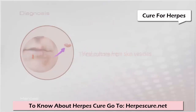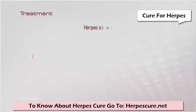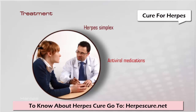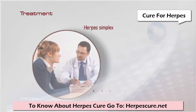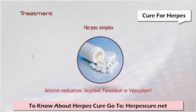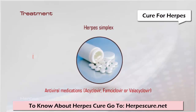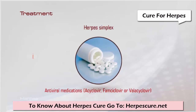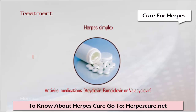Herpes simplex treatment: Your doctor will prescribe antiviral medications to relieve your symptoms, but these will not cure the disease as the herpes simplex virus remains latent in the nerve cells. Antiviral drugs limit the virus multiplication and suppress symptoms. Aciclovir is used for genital HSV, herpes labialis, and to prevent recurrent infections. Famciclovir or valaciclovir is also given for recurrent infections of genital HSV, and the use of these antiviral agents is safe in pregnancy.